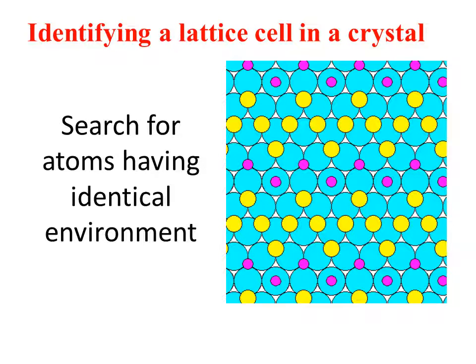How do we identify a lattice cell in a crystal? Here is an example of a two-dimensional crystal, with atoms represented by circles. Different colors and sizes are used for different types of atoms. To find which cell describes the crystal structure, we look for atoms whose environment is equal. For example, this violet atom has two other atoms at the top, right, and left — and so does this one. So these are equivalent points.